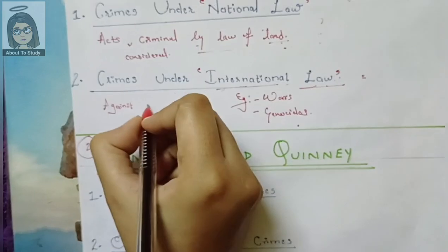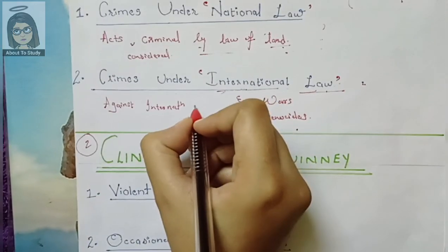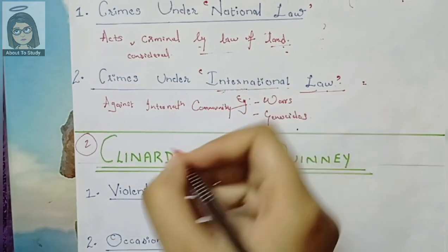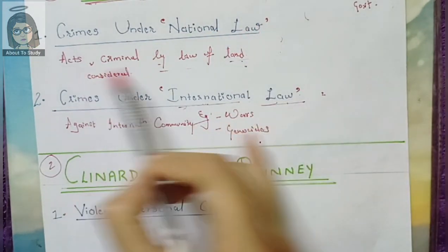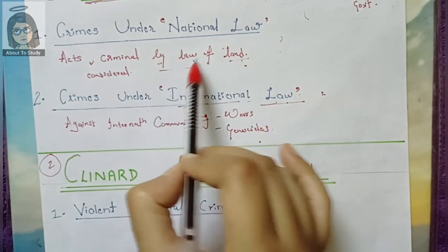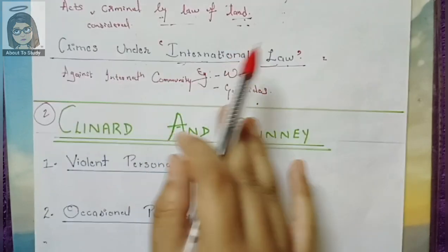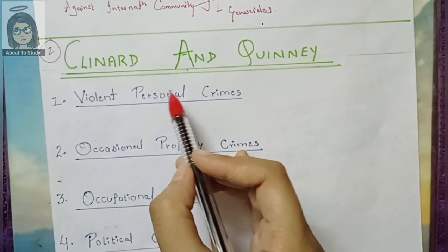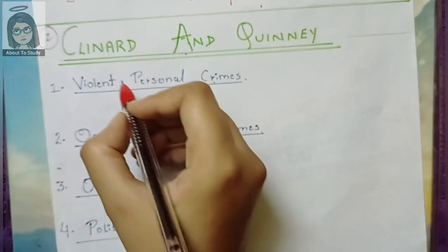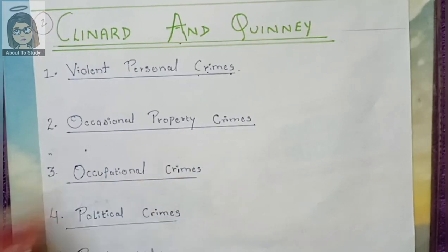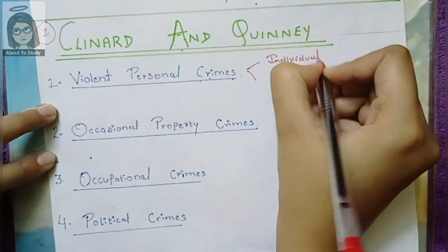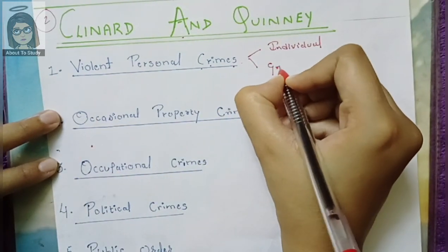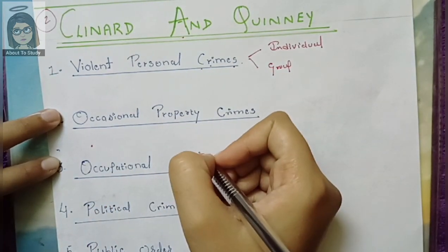This is an international matter against the international community. Now let's look at the Clineard and Quinney classification. The first category is violent personal crime. Violent personal crime is the type of crime which could be committed against an individual — a particular person — or this crime is also committed against a group as well.